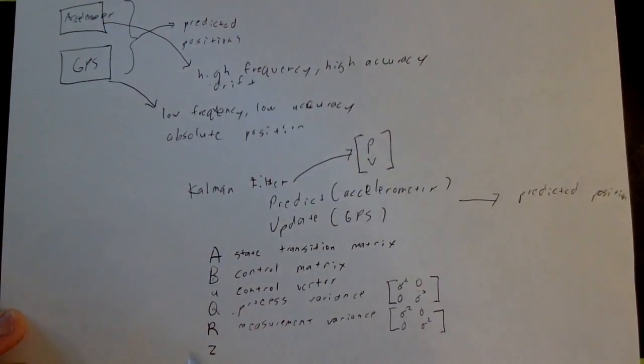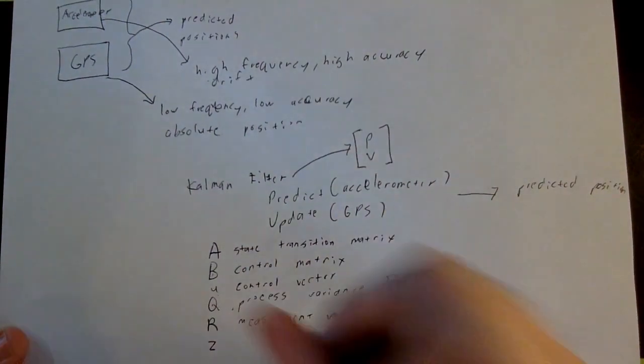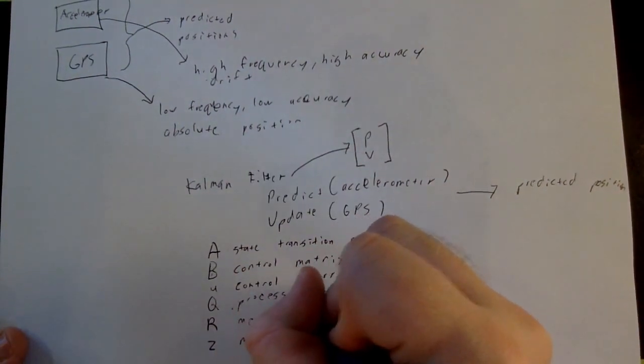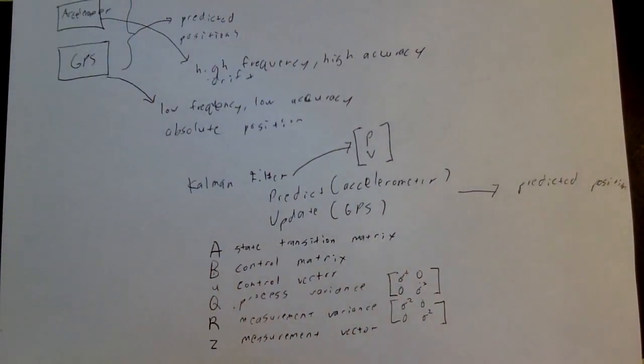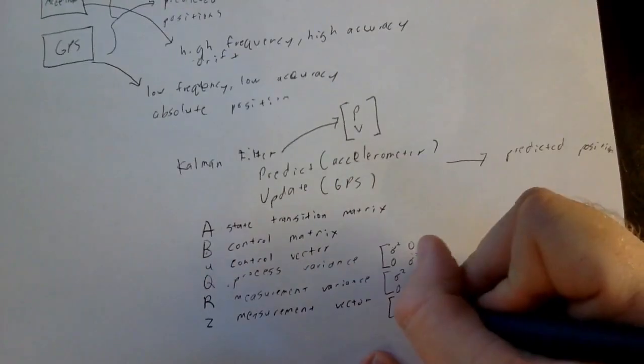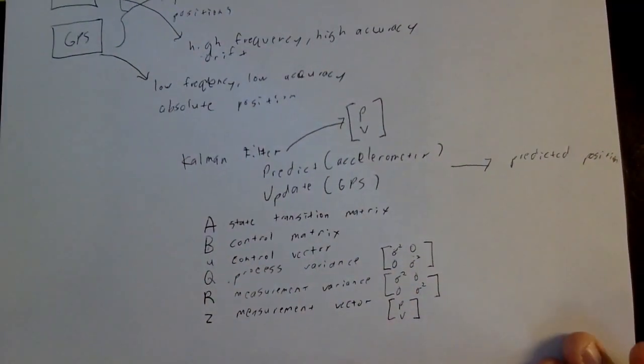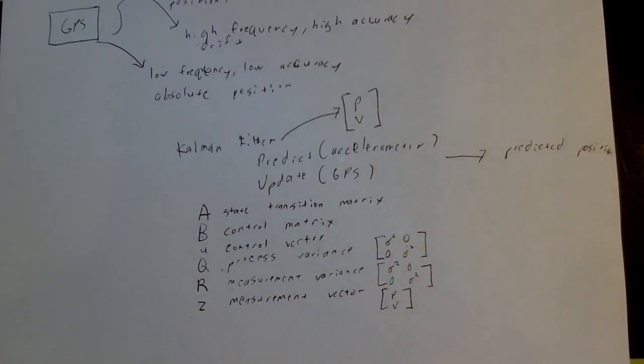Finally, moving on with our definitions, Z is just going to be your actual measurement vector, and that will just be your raw GPS readings, so you're going to get position and velocity directly from the GPS. Go somewhere else on the internet, do some googling, but if you take these variables, we're going to define these in the rest of this example, and then the actual implementation of the Kalman filter from there should be relatively straightforward.